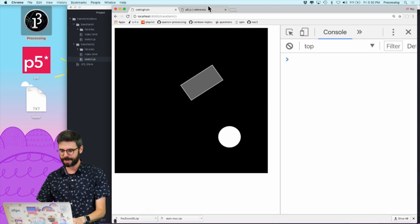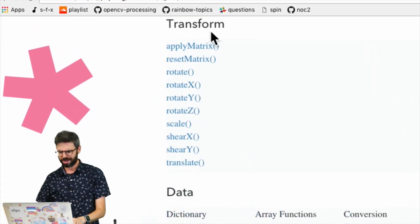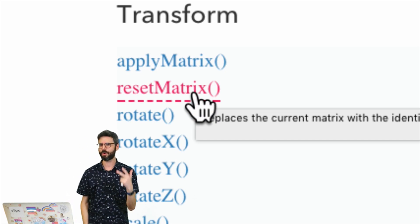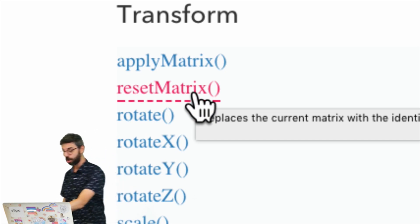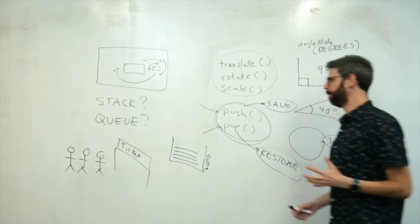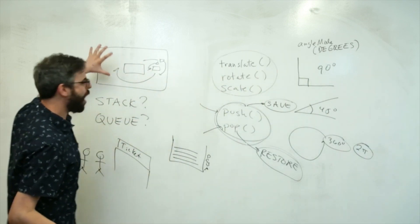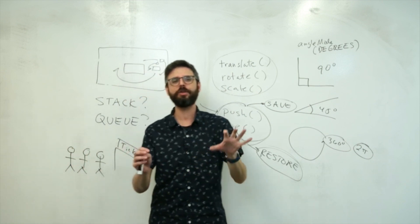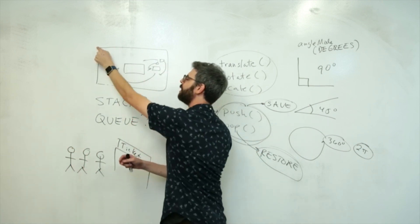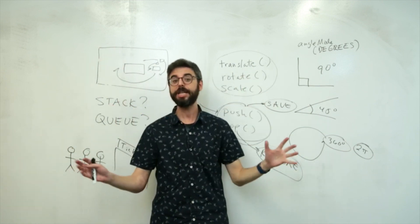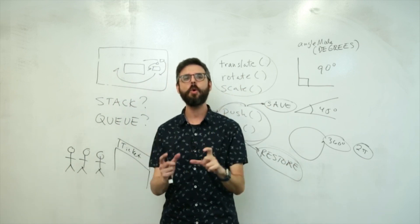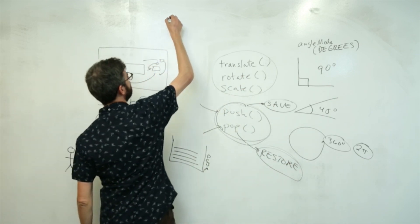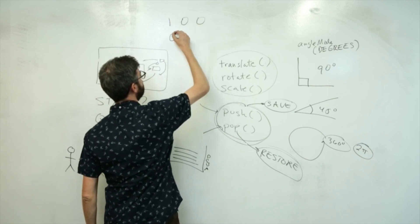But the other thing I wanted to mention here is you'll see like, oh, apply matrix, reset matrix. Why is the word matrix there? What are we talking about? Well, it turns out that the way the orientation, the transformation state, what is the transformation state? Is 0, 0 in the top left? Is there any rotation? Is there any scaling? Is stored in a matrix of numbers. And that matrix of numbers might look something like this, 1, 0, 0, 0, 1, 0.